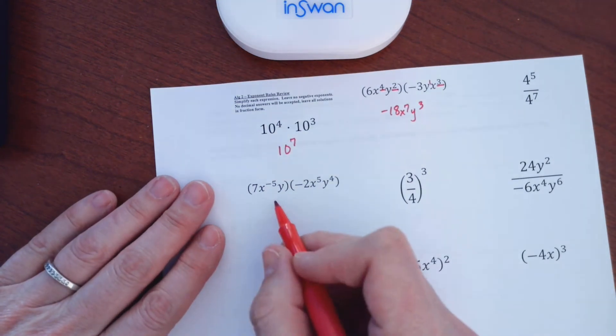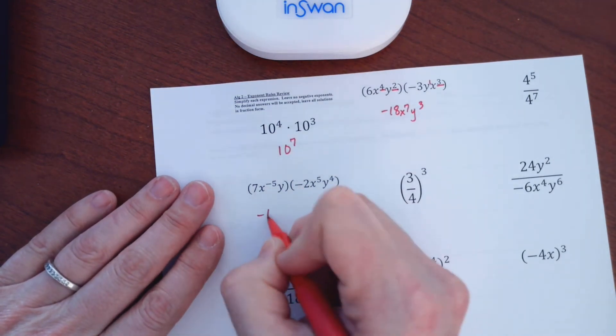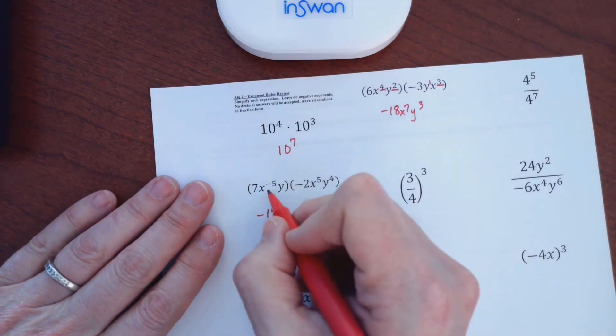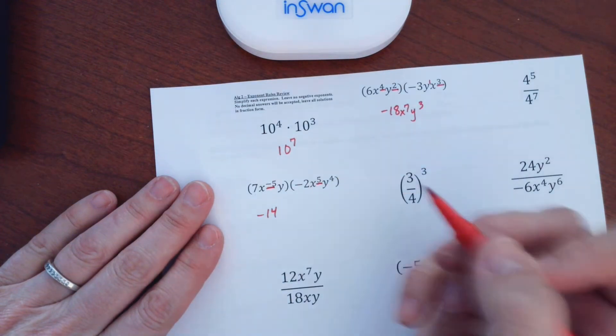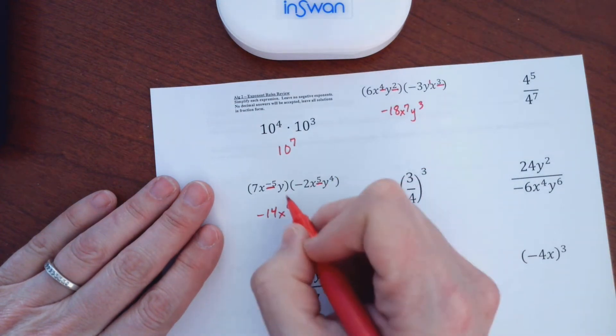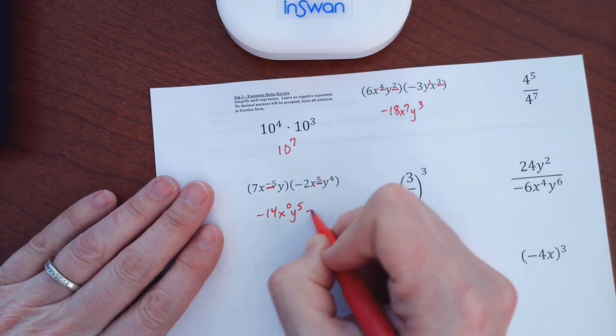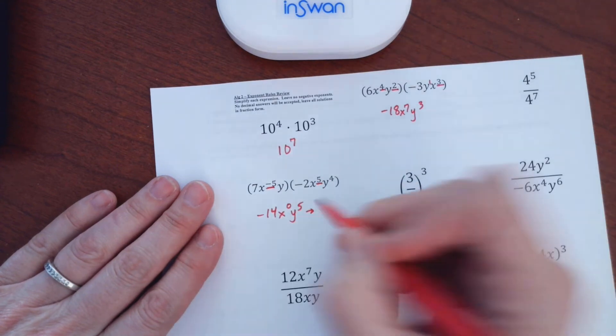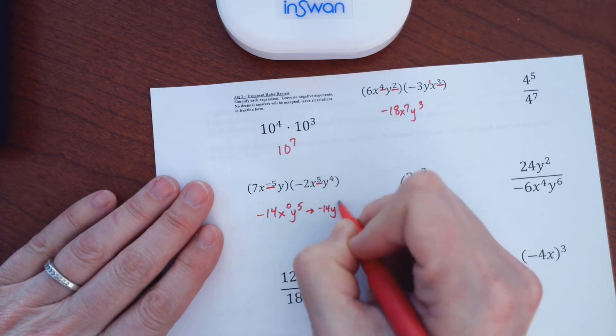So down here, same rule. 7 times negative 2 is negative 14. So here, I have a negative 5 with a 5, so I'm going to add those. They add up to 0. And 1 plus 4 is 5. So when I'm rewriting this, this could go away, because it's just equal to 1.